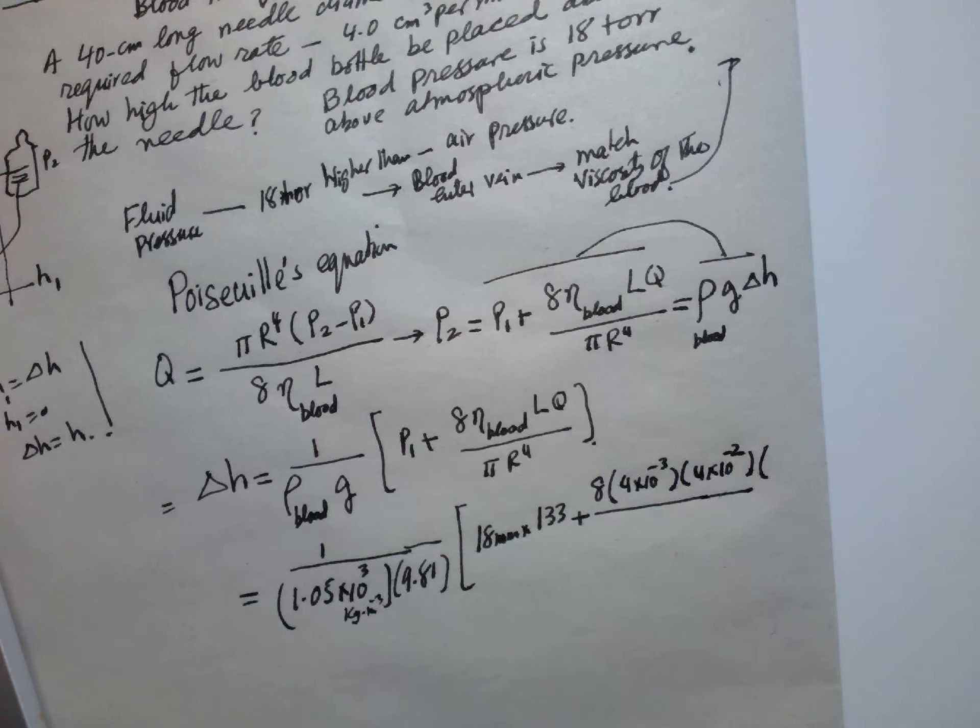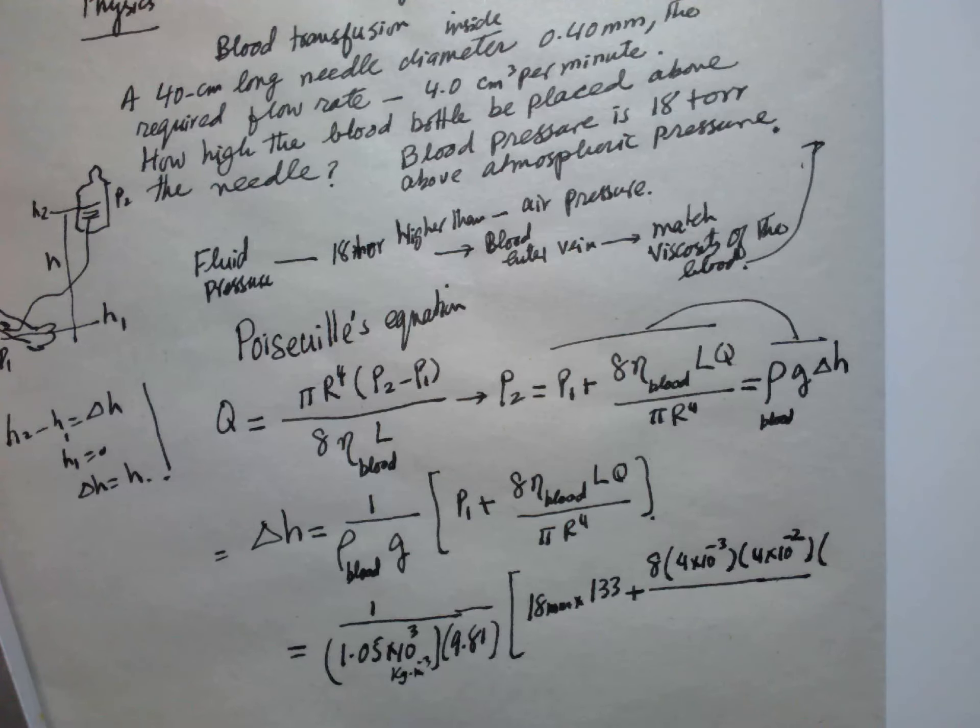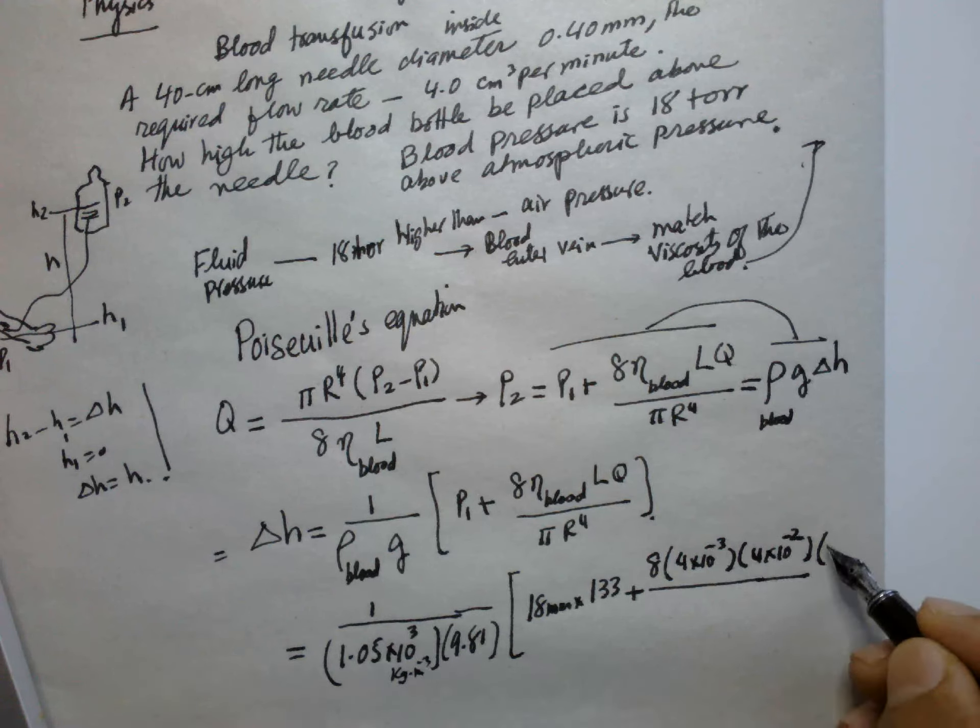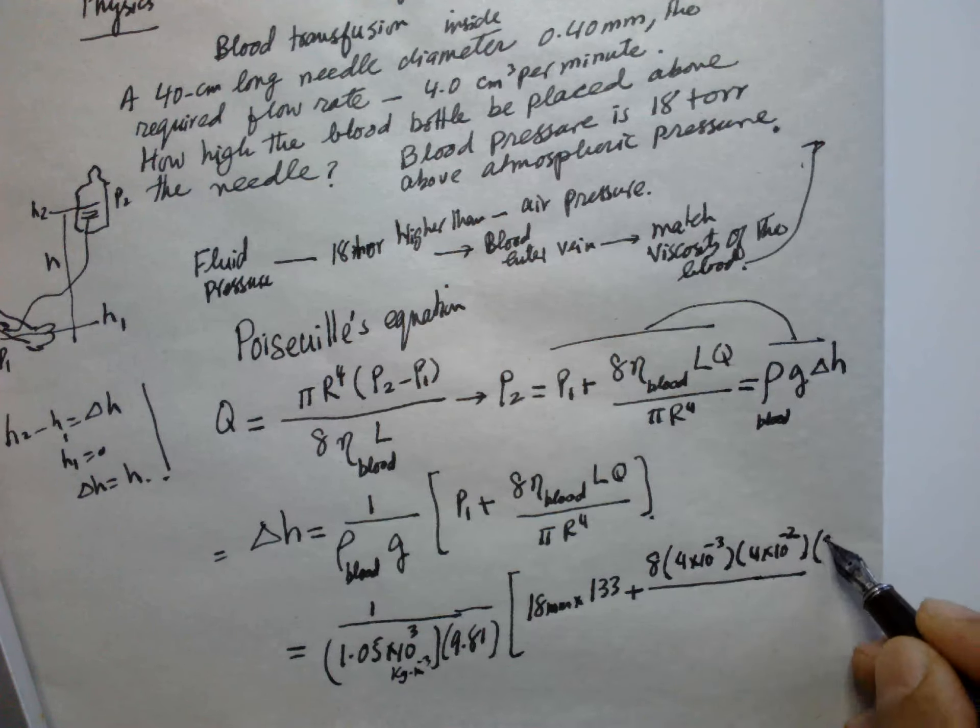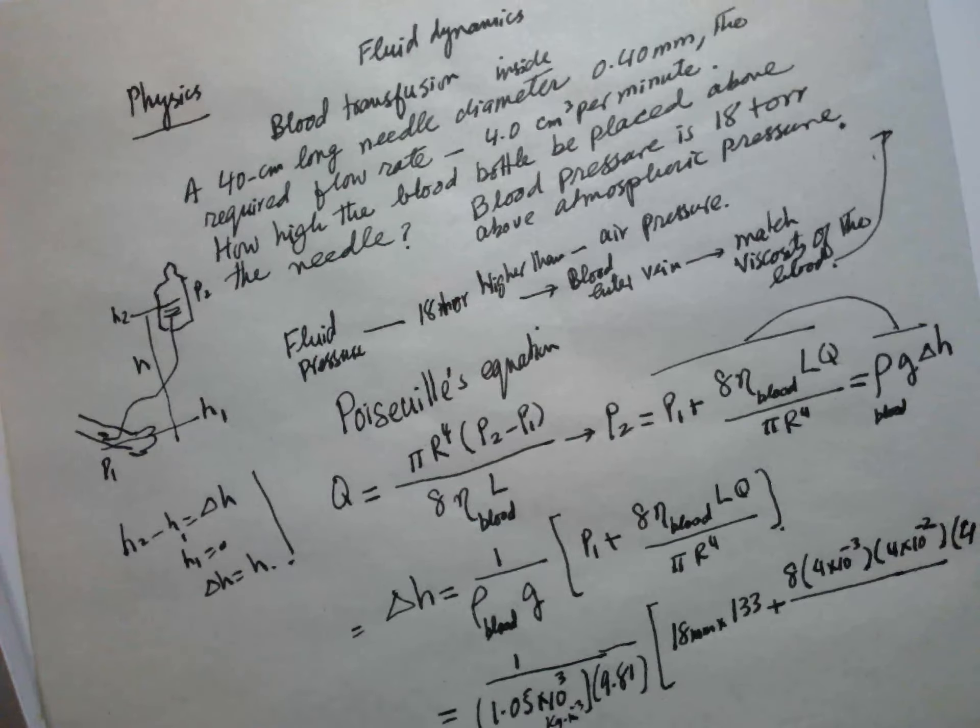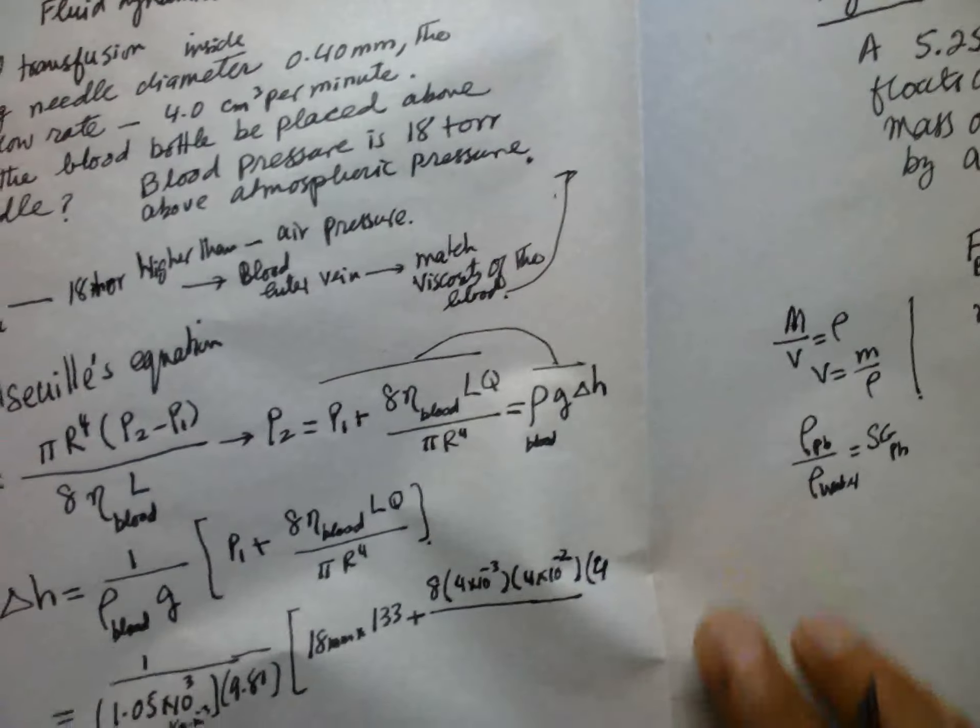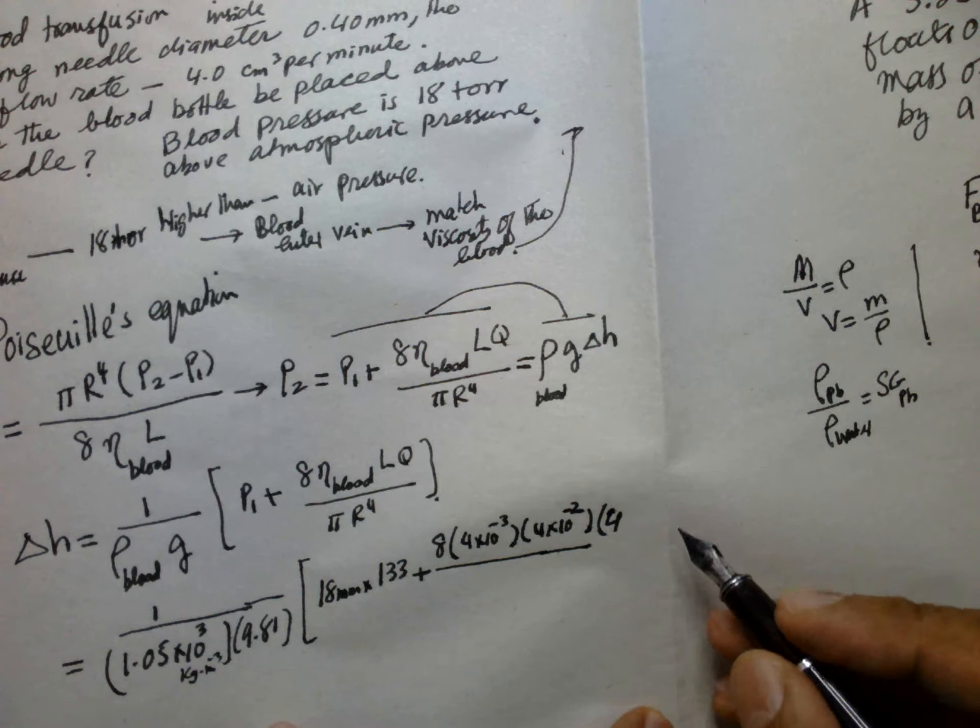So flow is equal to 4 cc per minute. This will be 4 × 10⁻⁶ divided by 60